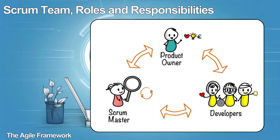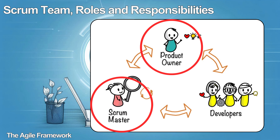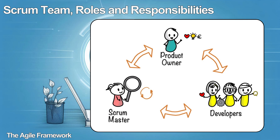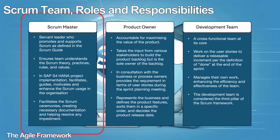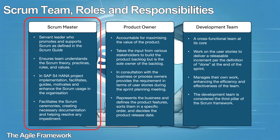Scrum teams are generally self-organizing and cross-functional. A Scrum team consists of a product owner, a Scrum master, and the development team. In a Scrum team, there is no hierarchy. There can be multiple Scrum teams and a Scrum of Scrums in one SAP S/4HANA implementation. The Scrum master is a servant leader who promotes and supports Scrum as defined in the Scrum guide. For the internal members of the team, the Scrum master ensures that they all understand the Scrum theory, practices, rules, and values. Additionally, the Scrum master helps members of the organization who aren't part of the Scrum team by guiding their interactions with the Scrum team.